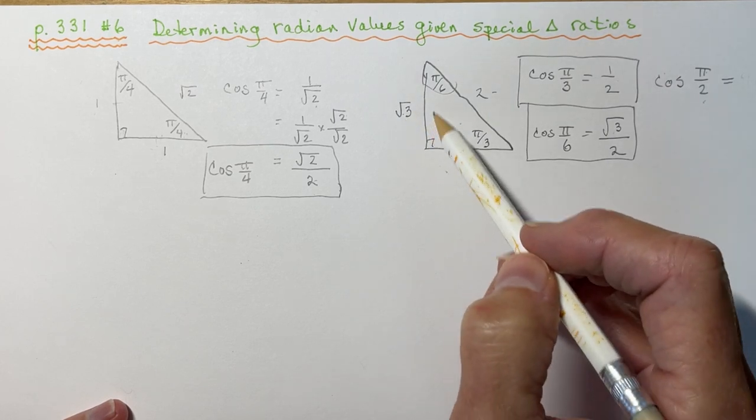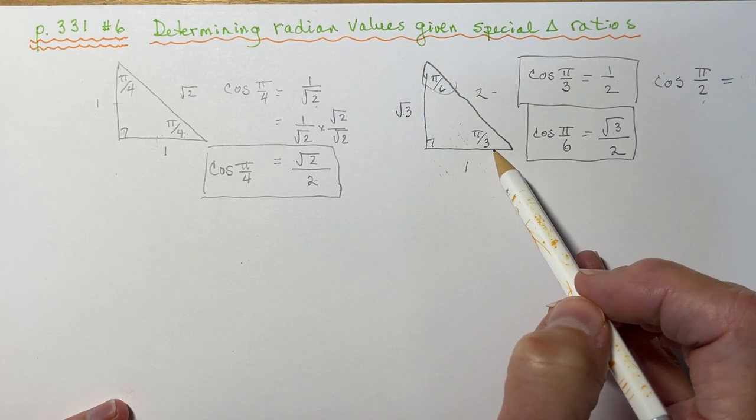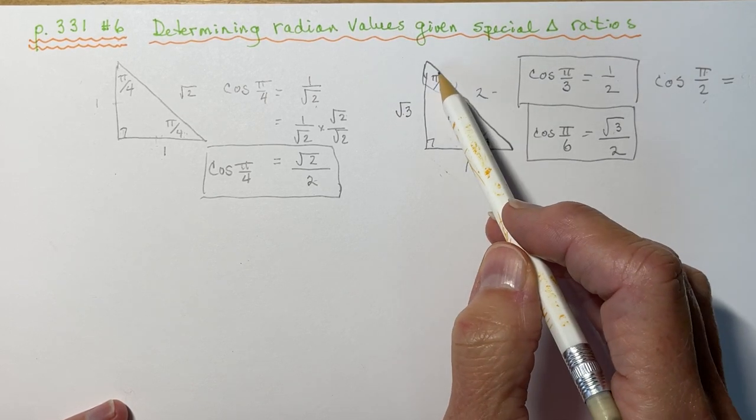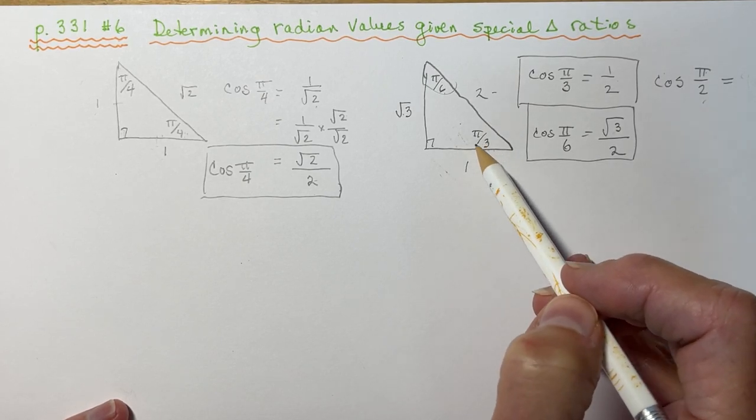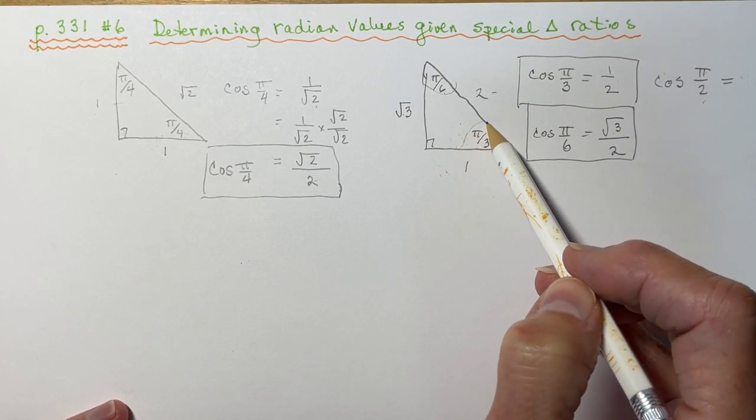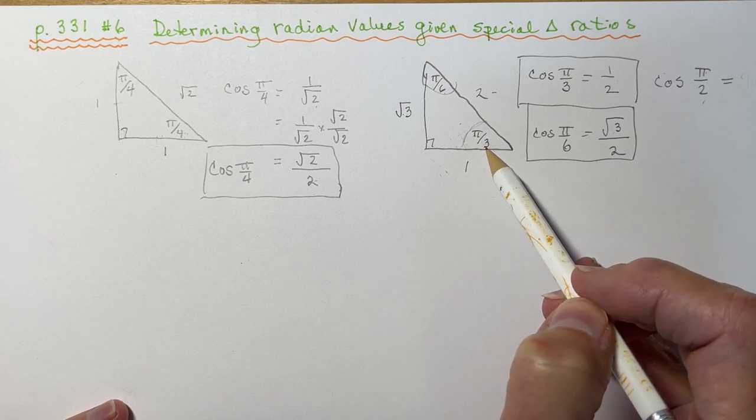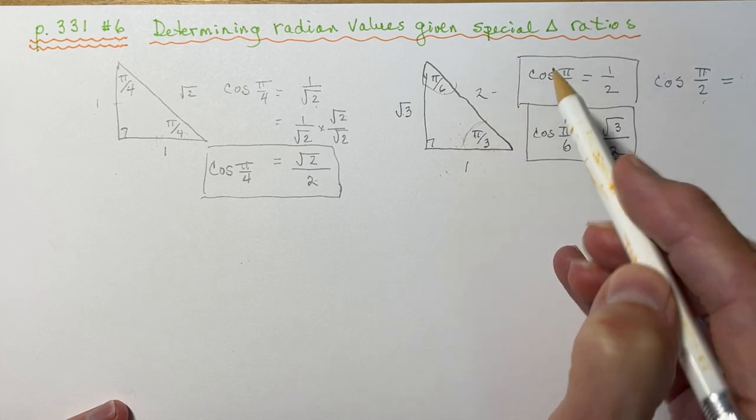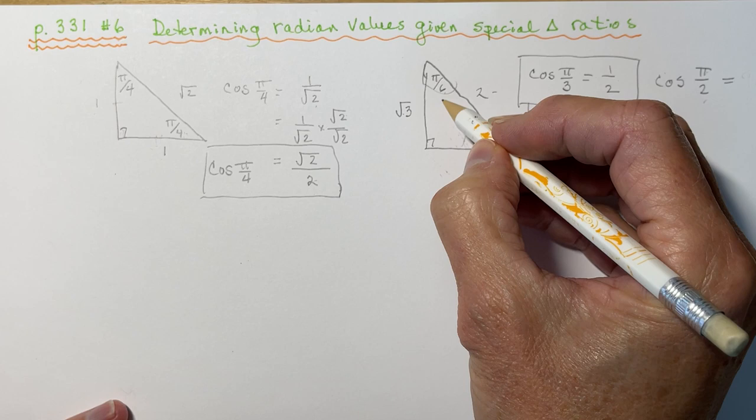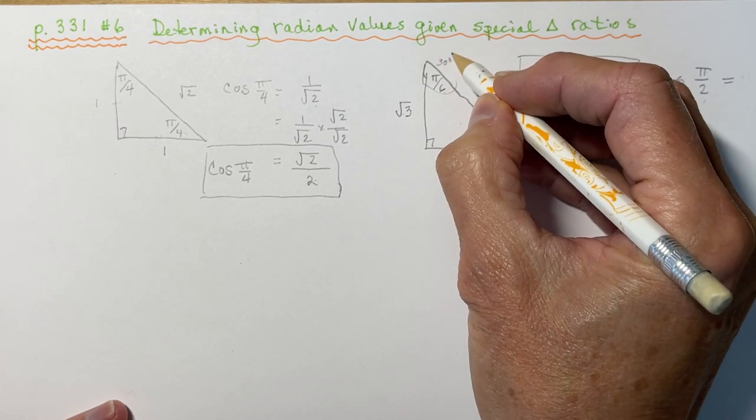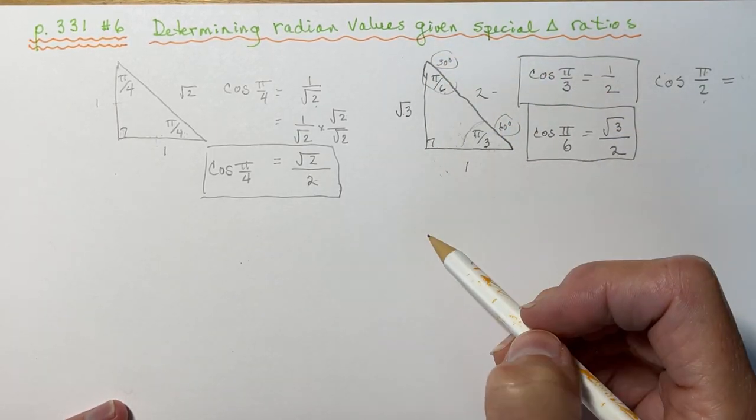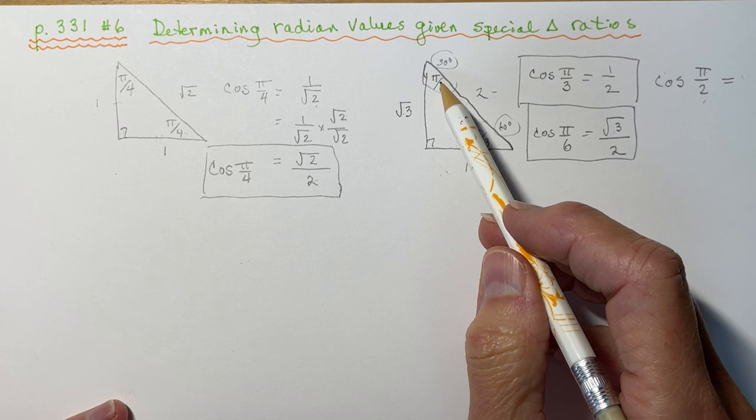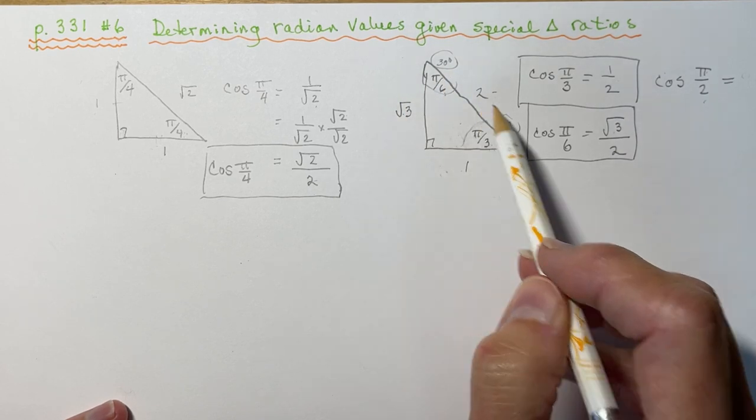Similarly, you have your other special triangle that has the 60 degrees. Remember, that's pi divided by 3, and 30 is pi over 6. I always get these ones mixed up myself sometimes, because I forget that I think the 3 is 30 degrees. But remember, the pi is 180. 180 over 3 is 60 degrees. So this was pi over 6, that was 30 degrees here. What is the cos of pi over 3? The cos of pi over 3 adjacent over hypotenuse is a half. And the cos of pi over 6 is root 3 over 2.